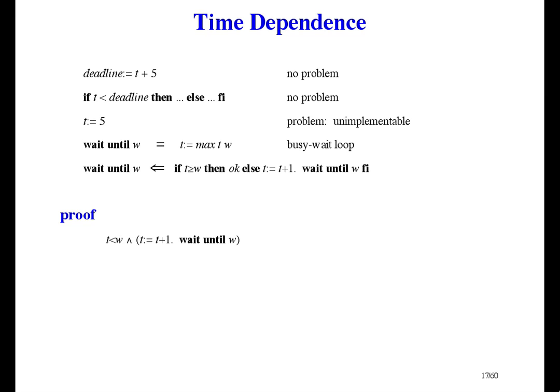The other case, well, we have to replace wait until with its definition. In the left conjunct, t is less than w is the same as t plus 1 less than or equal to w. And in the right conjunct, we should rewrite the final assignment and then use the substitution law.